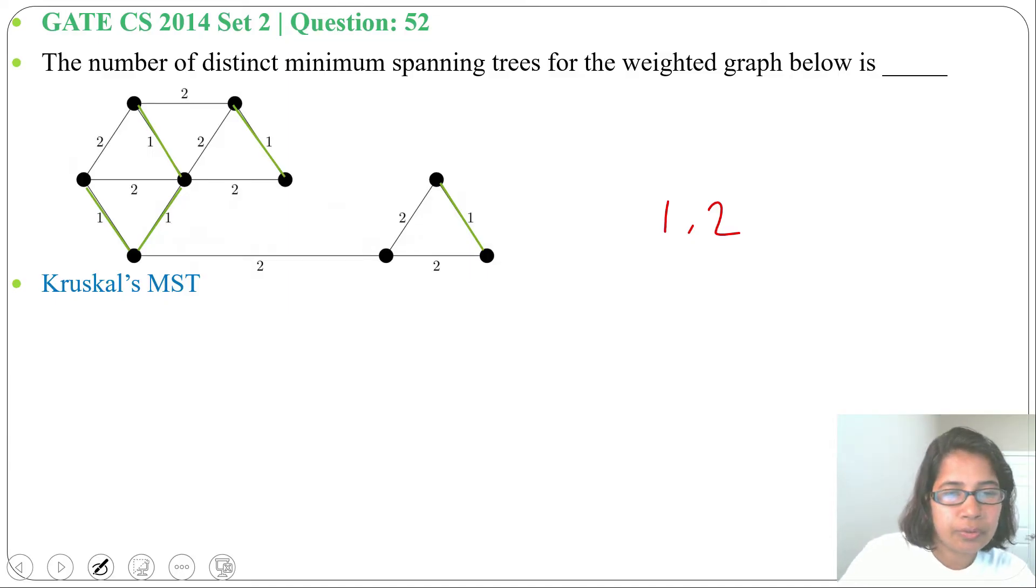So first I'll choose this 2. Next we'll skip this 2, as when we select this 2 it will be a cycle. Again we'll skip this 2 as it will be a cycle. So these two 2s we'll skip as they are creating cycles.